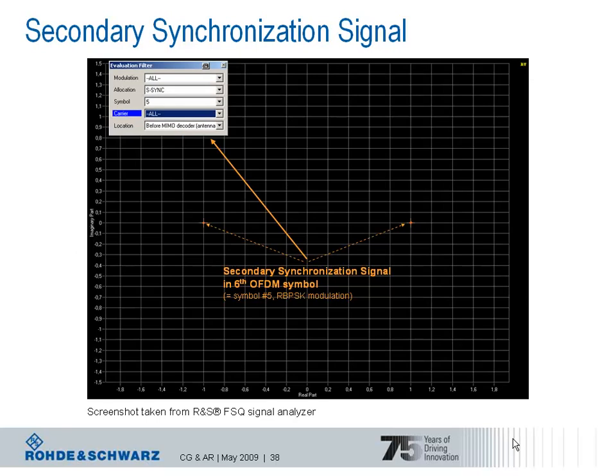Looking at the constellation diagram showing the secondary synchronization signal, it appears to be pure BPSK modulation. In fact, the secondary synchronization signal is represented by an interleaved concatenation of two length-31 binary sequences. These two sequences are scrambled with a scrambling sequence depending on the physical layer identity transmitted with the primary synchronization signal. So without finding the primary synchronization signal, the terminal cannot decode the secondary synchronization signal. The combination of the two used sequences defines the physical layer cell identity group. Like the PSS, the SSS is also transmitted on 62 out of 72 reserved subcarriers around the unused DC subcarrier.